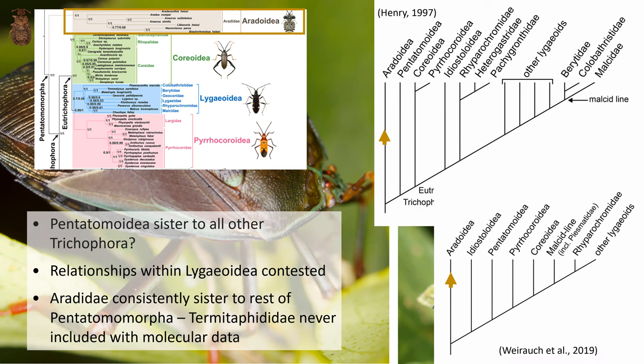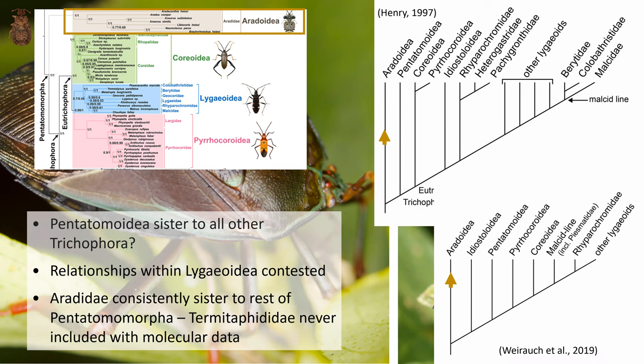While Erratoidea is consistently placed as sister to the rest of Pentatomomorpha, the family Thaumastellidae is never included with molecular data. We are commonly seeing Erratoidea placed as sister to the rest of Pentatomomorpha, but that is really only Erratidae being included with molecular data.